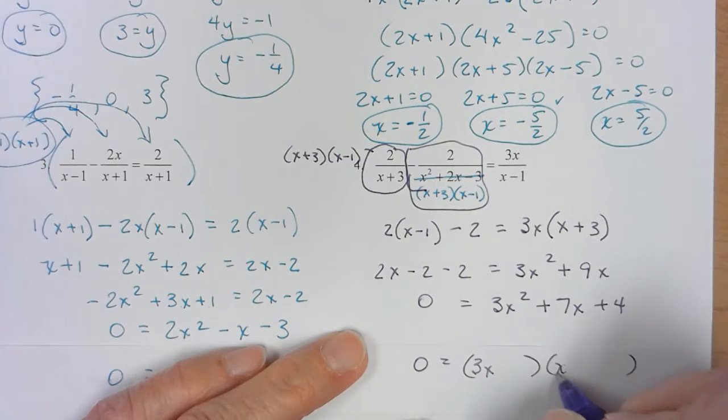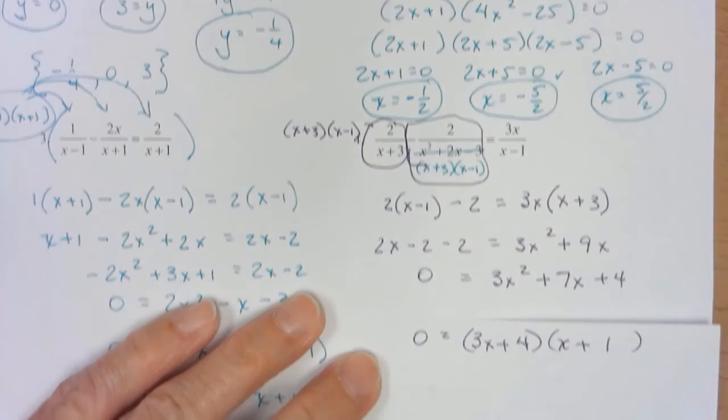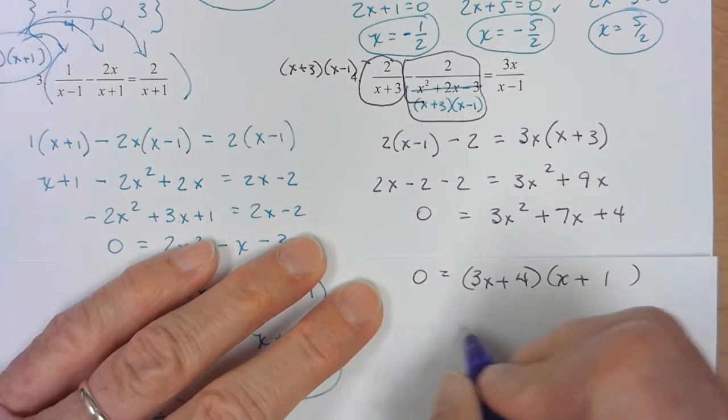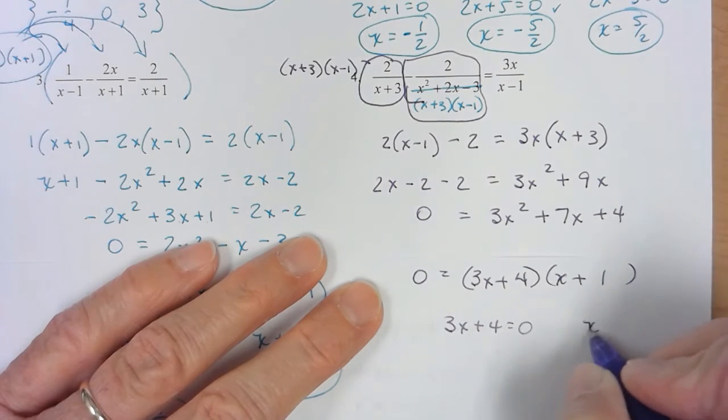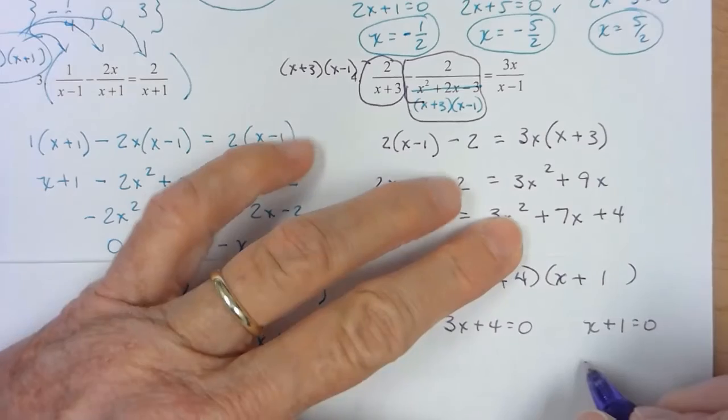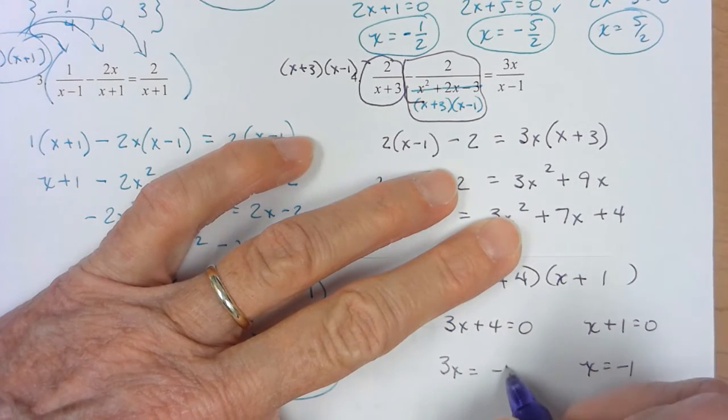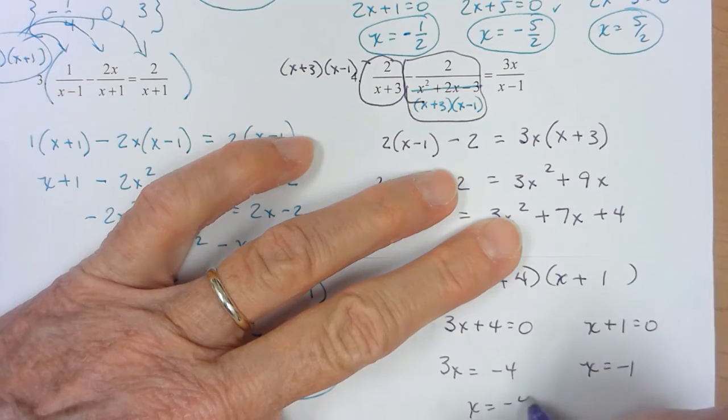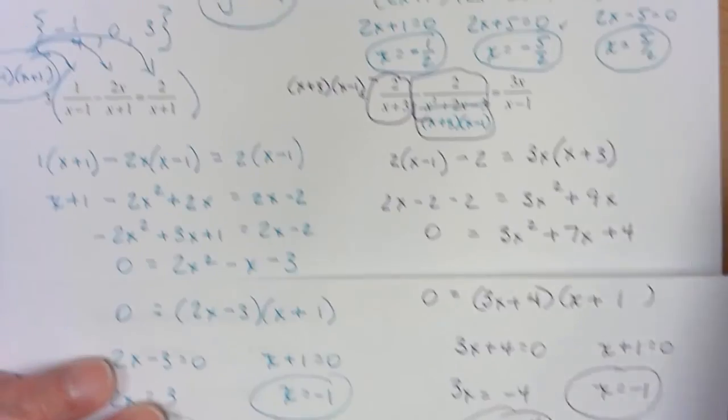Let's see. B 3x. I need a 4 here. So 3x squared outside is 3x, 4x, 7x, last times last. Okay. So I'm going to set that individually equal to 0.